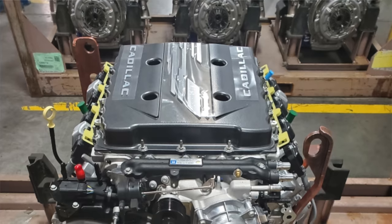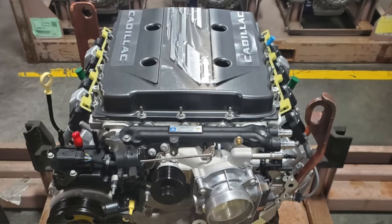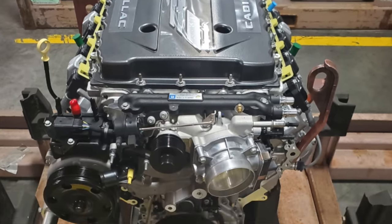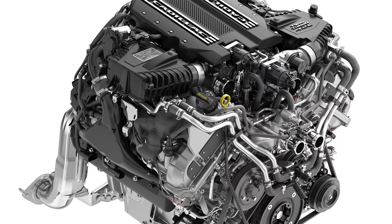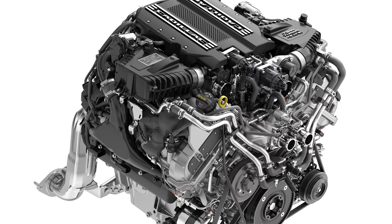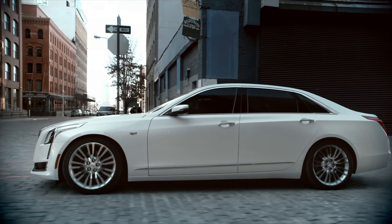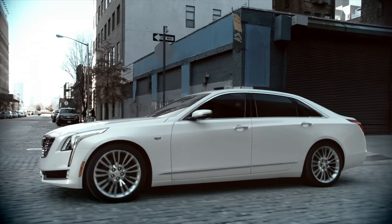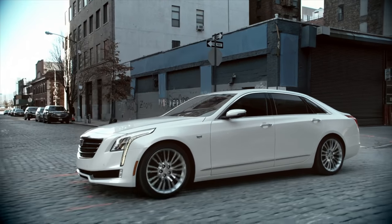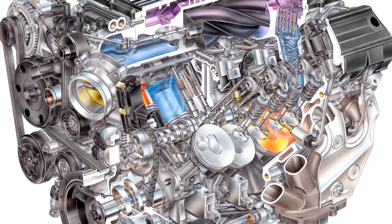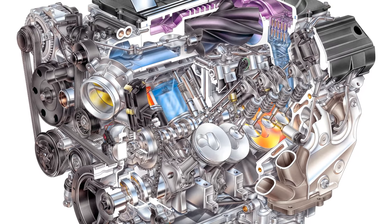Now, this story gets a bit confusing because, yes, this is a CT5V Blackwing V8 engine. However, GM developed a 4.2 liter twin turbocharged V8 Blackwing engine specifically for the CT6V, which is no longer in production. But the Blackwing name has returned, so I thought it'd be fun to compare these two V8 engines.